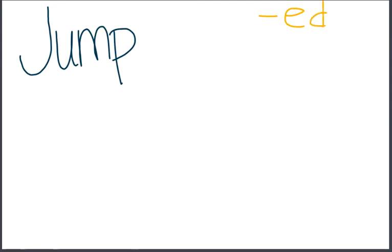I want to talk about the word 'jump.' This is our base word or root word before we add any endings. Our endings that we are working with are ED and ING. Which ending, if you added it to 'jump,' do you think is used to show past tense — which means it already happened, it happened in the past? And which ending is used to show present tense, which is happening now, today? What do you think?